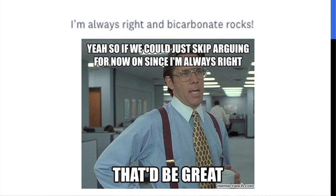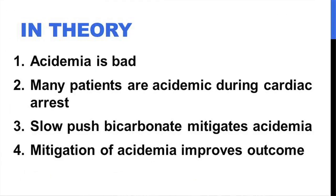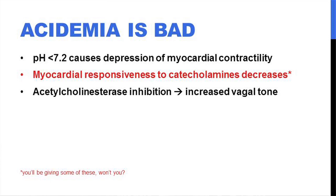In theory — and I'm going to ask you to follow me on this theoretical pathway — first, acidemia is bad. pH less than 7.2 causes depression of myocardial contractility, decreases responsiveness to catecholamines, and actually inhibits acetylcholinesterase, which increases vagal tone.